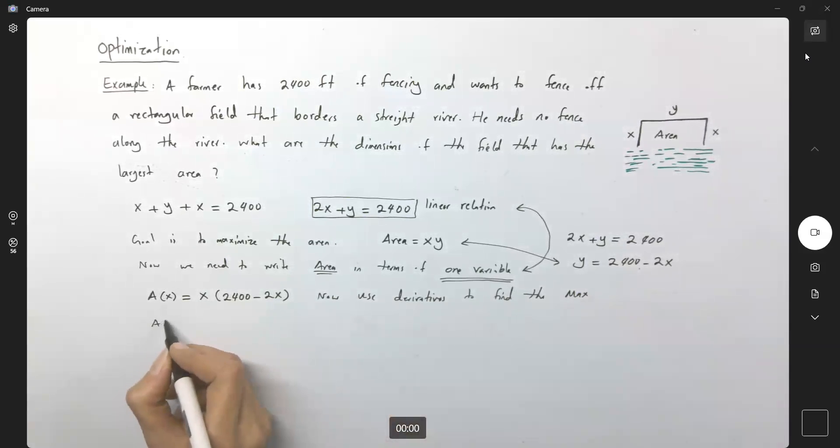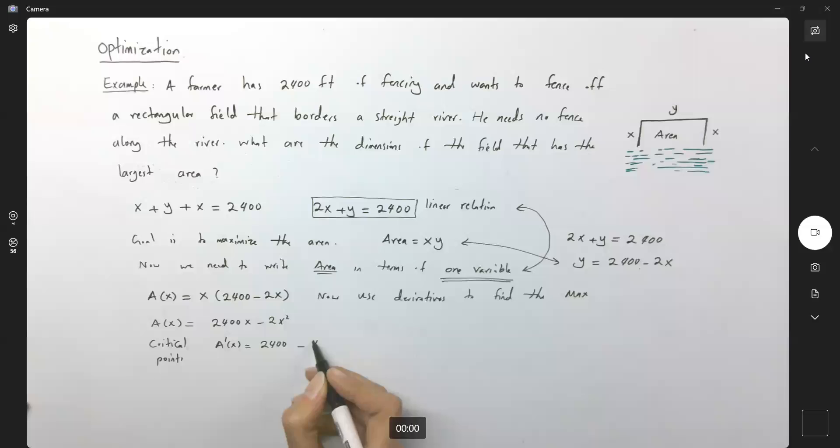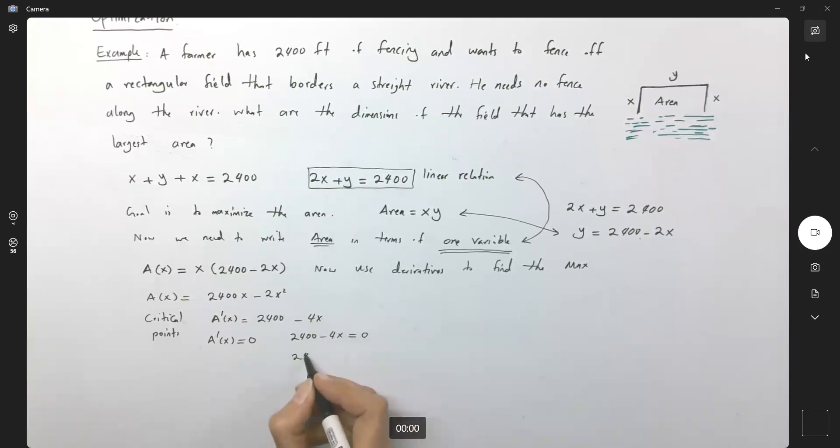So let's do that. Remember that this is my function. I can write it as 2,400x minus 2x squared to find critical points. We need to take the derivative of this function and set it equal to zero. But the derivative of this function is 2,400 minus 4x. Set the derivative equal to zero. So 2,400 minus 4x is equal to zero. So it means that 2,400 is equal to 4x or if you divide both sides by 4, x becomes 600.